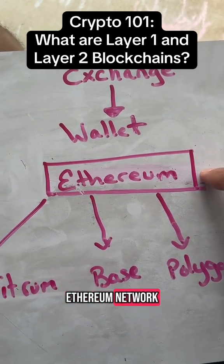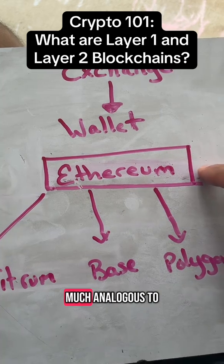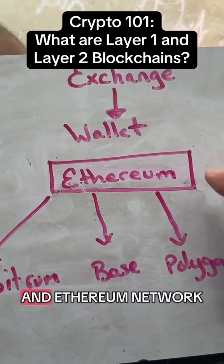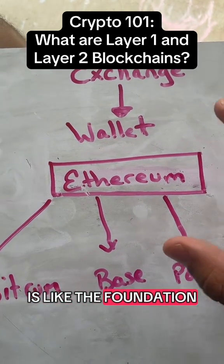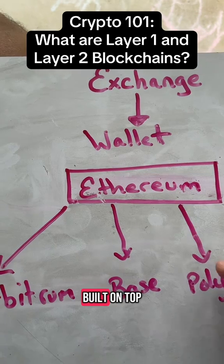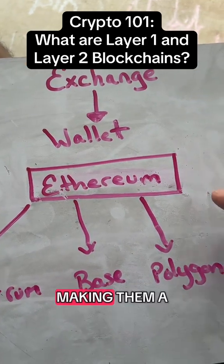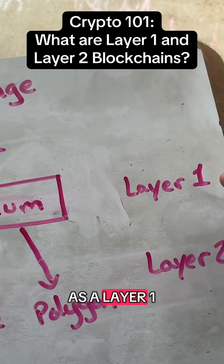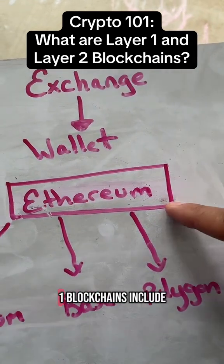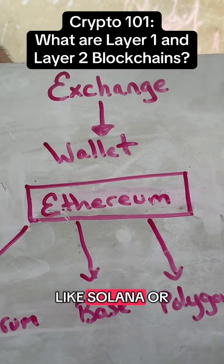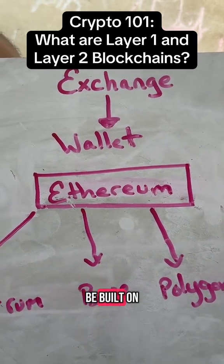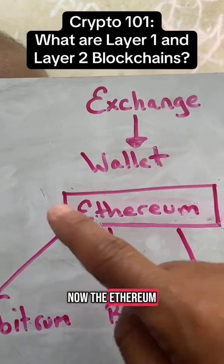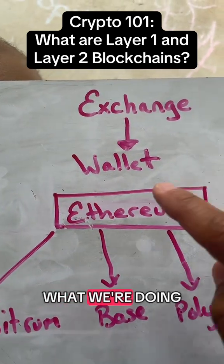Let's say that we are working on the Ethereum network, which is very much analogous to my traffic analogy. The Ethereum network is like the foundation — all of these layer twos are built on top of Ethereum, making them a layer two. So Ethereum is classified as a layer one. Other layer one blockchains include Solana and Bitcoin, and things can be built on top of those layers as well.